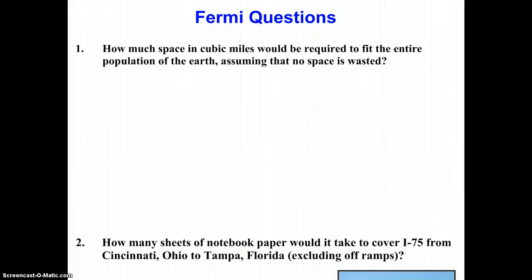So we want to fit the entire population of the Earth into whatever space in cubic miles that would be. So we need to take people and convert them to cubic miles. So let's start with people. How many people on the Earth? Well, last time I checked, there was over 7 billion people on the Earth. 7 billion would be 7 times 10 to the 9th. And so we need to determine 7 billion people's order of magnitude. And so that would be between 10 to the 9th and 10 to the 10th.